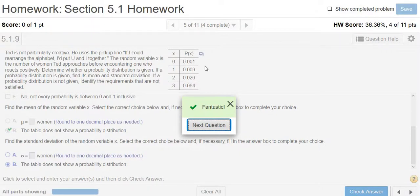So when you're doing these problems, you just have to make sure you get 1. If you don't get 1, then you just pick the answer that says not a probability distribution. That's it.